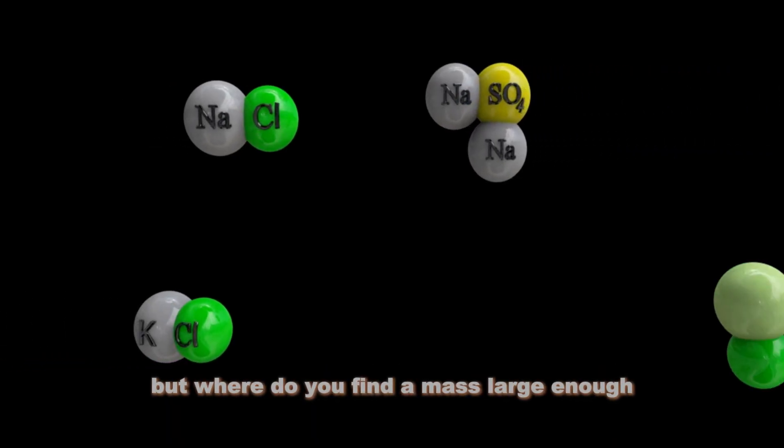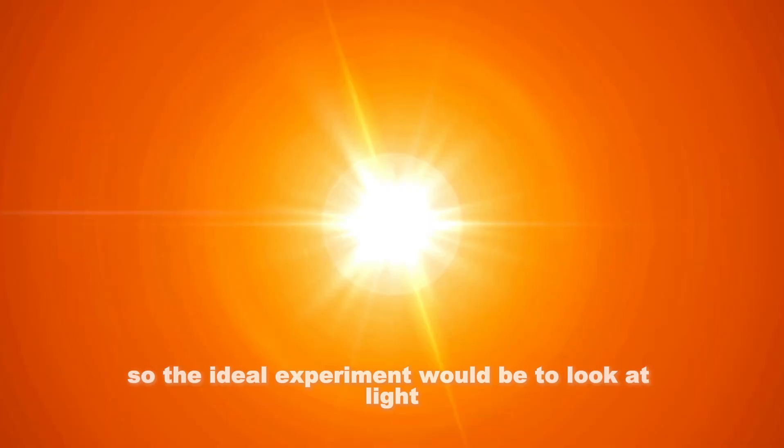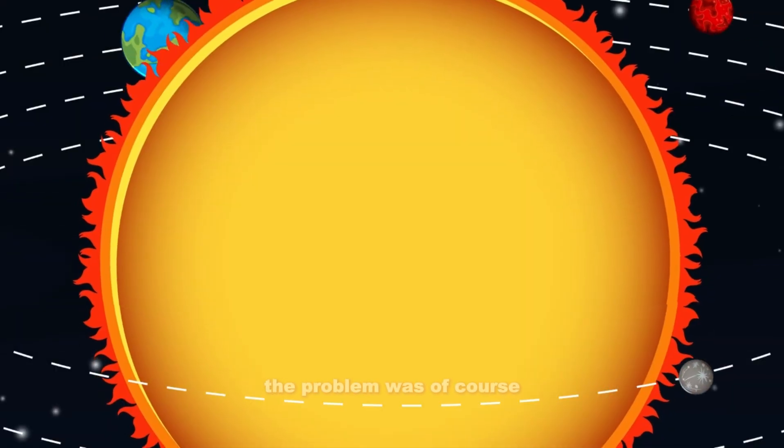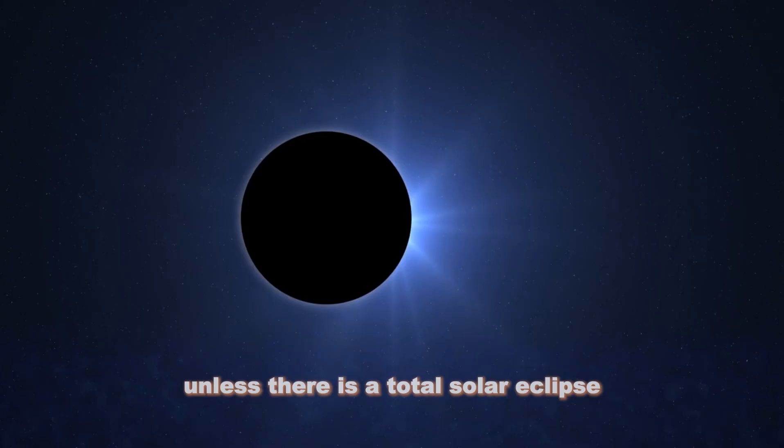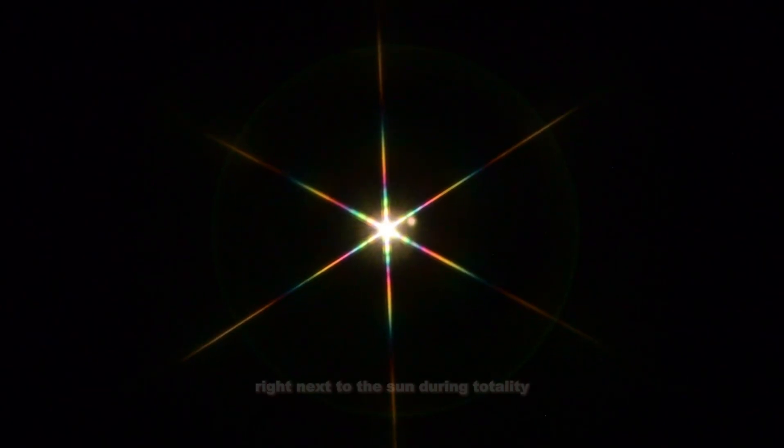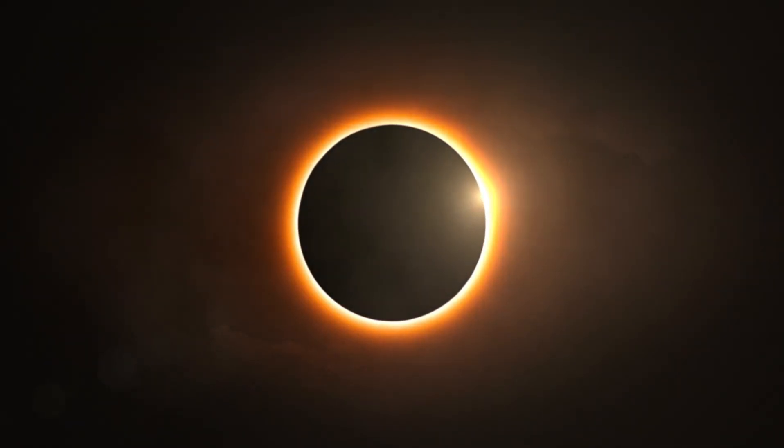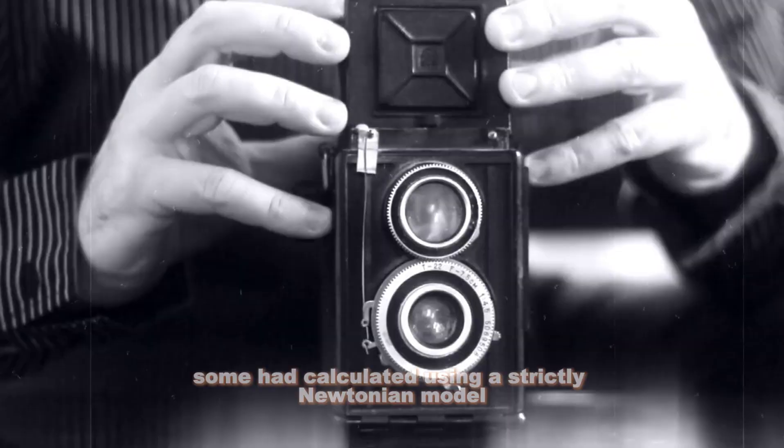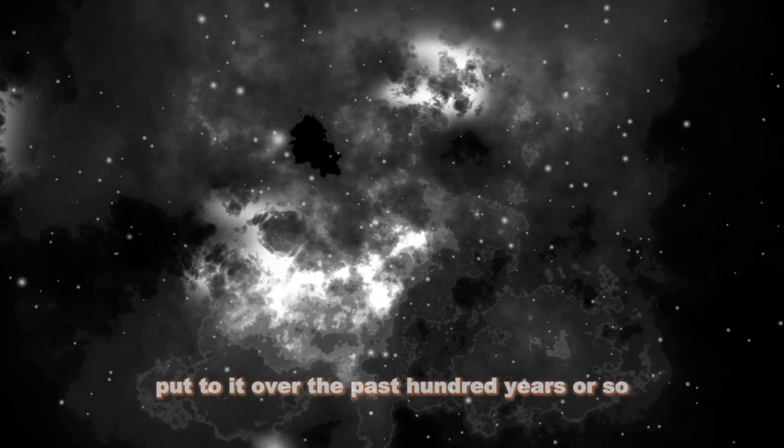So Einstein reasoned light must also bend when it passes a large mass. But where do you find a mass large enough? Well, the only obvious huge mass near the earth is the sun. So the ideal experiment would be to look at light passing just next to the sun and see if it is deflected, say light from distant stars. The problem was, of course, the sun is just so bright, you can't see stars right next to it, unless there is a total solar eclipse, which is exactly what happened in 1919. So Arthur Eddington set out to take pictures of the stars right next to the sun during totality. And what he found by analyzing those pictures was that their positions appeared deflected by the precise amount predicted by Einstein's general theory of relativity. The result was twice the deflection some had calculated using a strictly Newtonian model, and general relativity has passed virtually every test put to it over the past hundred years or so.